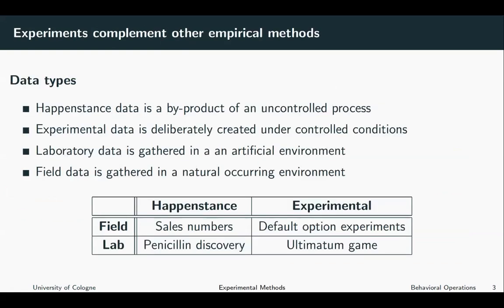Experiments complement other empirical methods. Let us first talk about different data types. We want to talk about happenstance data — happenstance data is a byproduct of an uncontrolled process, so most of the data we gather is happenstance data. We also have experimental data, which is deliberately created under controlled conditions, where we basically design the observation environment. This is an important differentiation between happenstance and experimental data.